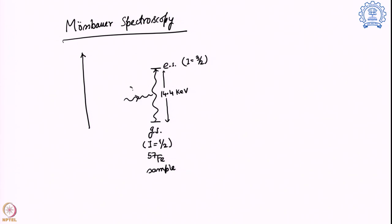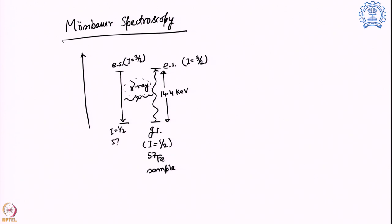We need a proper source of energy in the form of gamma rays, which is the energy that will excite the ground state to the excited state. This gamma ray of the particular energy has to match so that we can achieve the resonance condition. This electromagnetic radiation comes from an already existing excited state I=3/2 to I=1/2 of another 57-iron, which we call the source. It is typically developed from a radioactive cobalt material, which gives this metastable iron-57 at the 3/2 state, which slowly comes down to the I=1/2 state and releases the gamma ray.